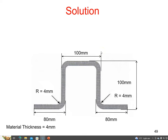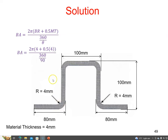The first thing we're going to do is calculate the bend allowance. The bend allowance using the 2pi method is 2pi times the bend radius plus half the material thickness, all over 360 degrees, divided by the bend angle. The bend angle here is 90 degrees, the bend radius is 4 millimetres, and the material thickness is 4 millimetres. That gives a bend allowance of 9.42 millimetres.